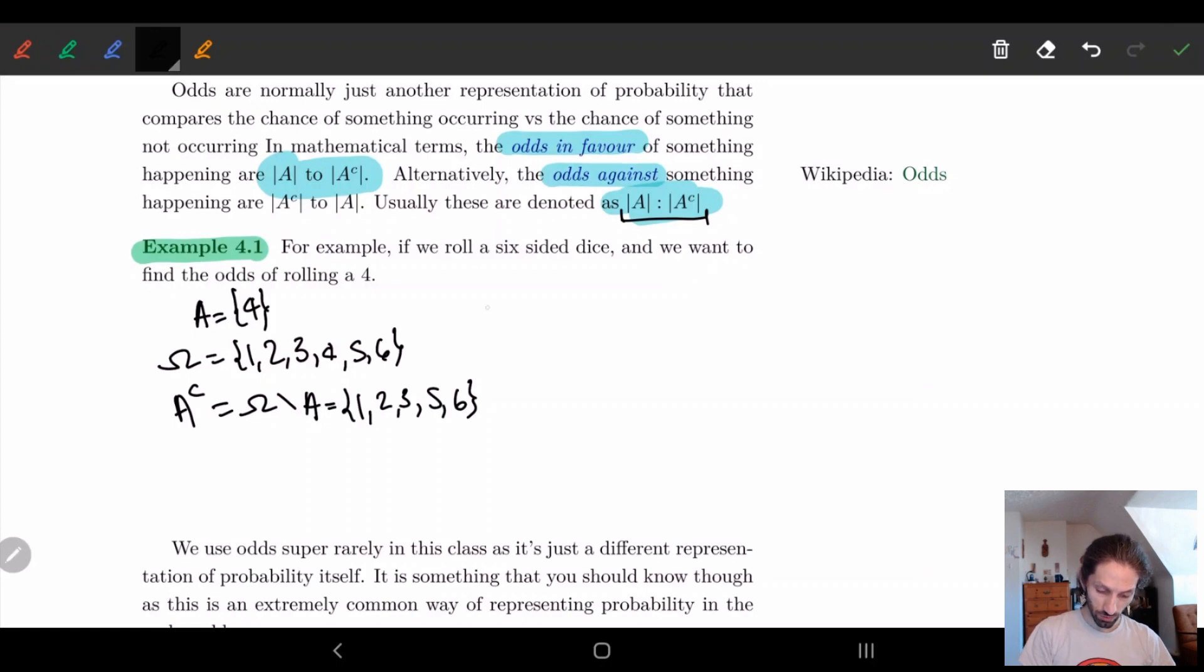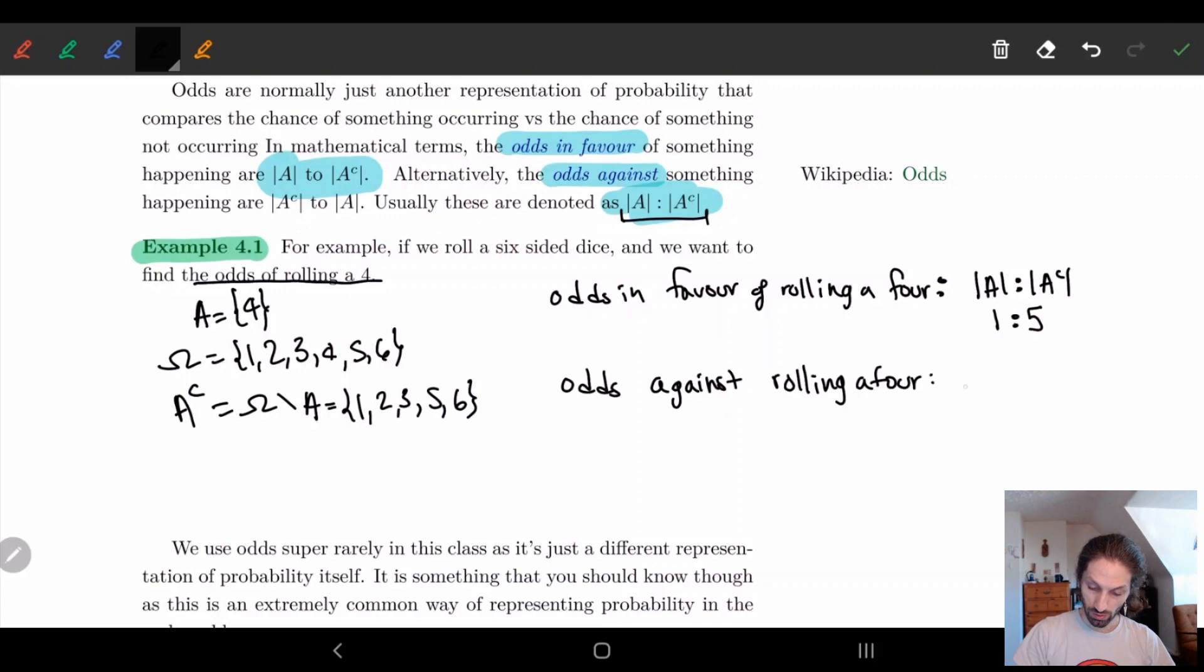So to find the odds in favor of rolling a four, this is given by the size of A to the size of A complement. So here we have one for the size of A, there's only one element, and A complement has five elements, so it's one to five. The odds against rolling a four is given by A complement to A, so here A complement is 5, A is 1, so it's five to one against.